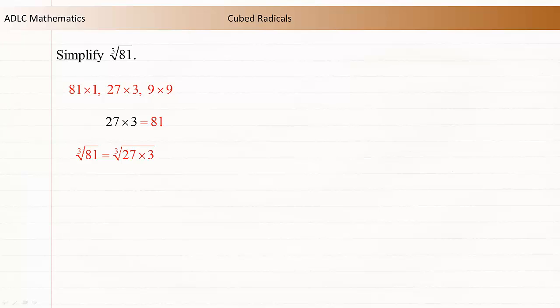Express the cube root of 81 as a product of its factors. Separate and give each factor its own root sign. The cube root of 3 to the power of 3 is equal to 3.